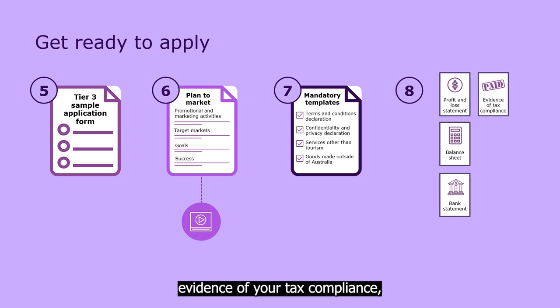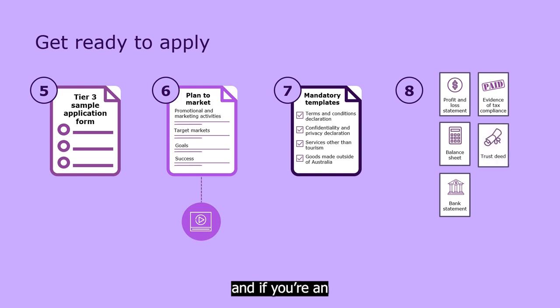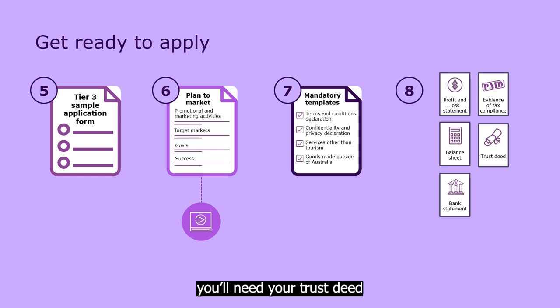Evidence of your tax compliance — for example, documents like a business activity statement or notice of assessment. And if you're an SME that operates as a trust, you'll need your trust deed and any amendments, if that applies to you.